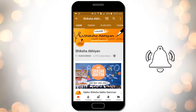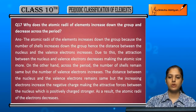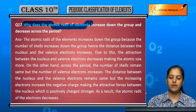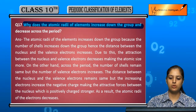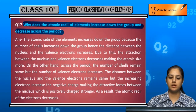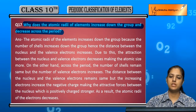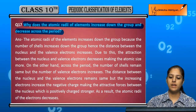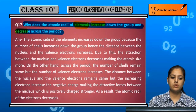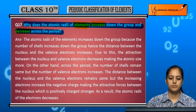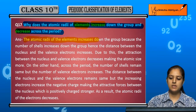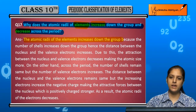Question 17: Why does the atomic radii of elements increase down the group and decrease across the period? When we move down the group, why does the atomic radii of elements increase? Atomic radii of elements increases down the group.